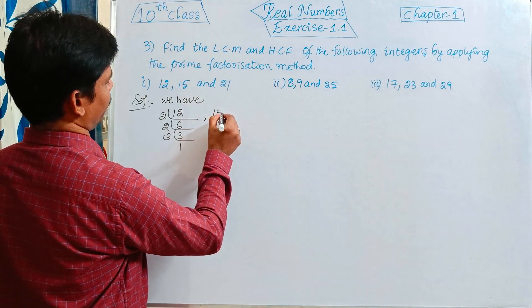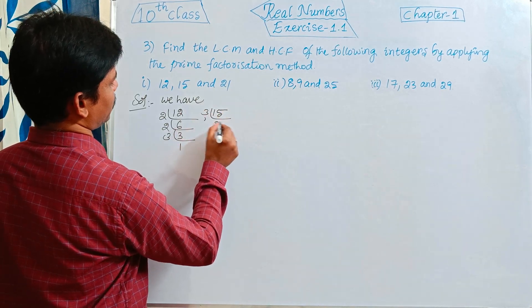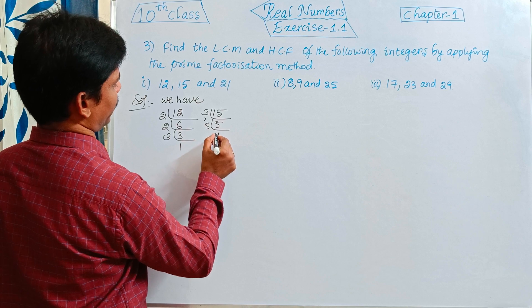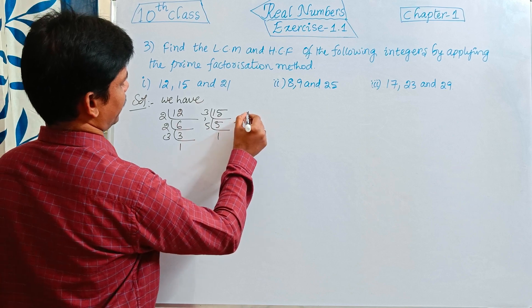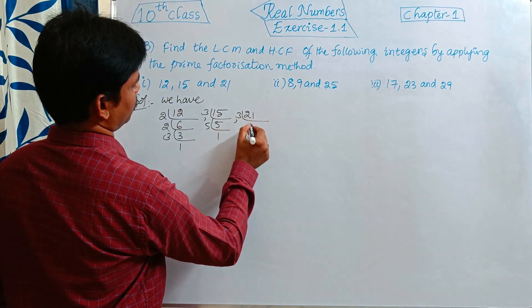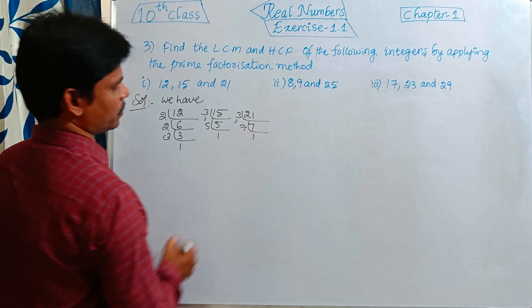Next, 15: 3 into 5 is 15, 5 into 1 is 5. And next, 21: 3 into 7 is 21, 7 into 1 is 7.